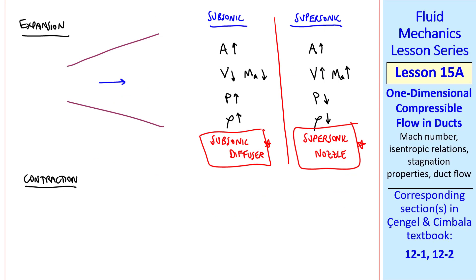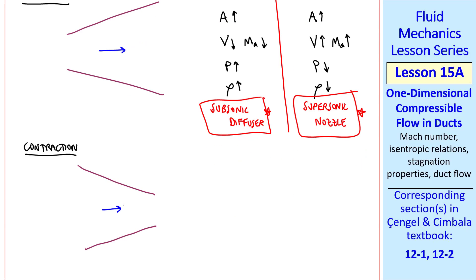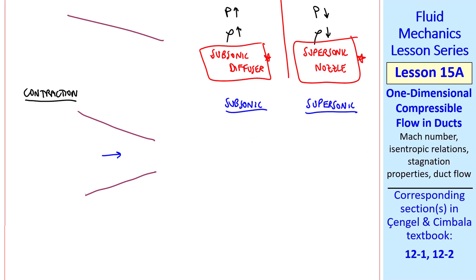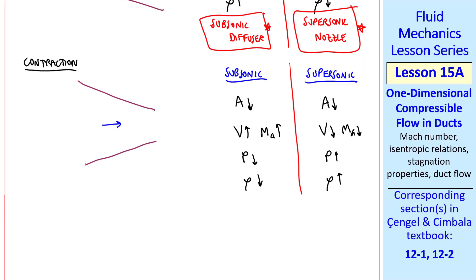Now let's look at a contraction or a converging duct. Again we compare subsonic and supersonic flows. In both cases, the area goes down. For subsonic flow, V goes up and Mach number goes up. But the behavior is opposite for supersonic flow. Similarly, pressure acts oppositely, as does density. The wording is exactly opposite as well. This flow is called a subsonic nozzle or a supersonic diffuser.